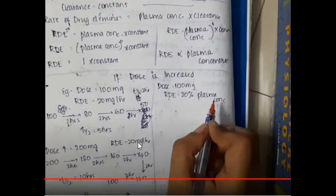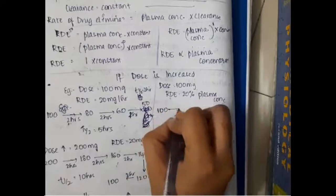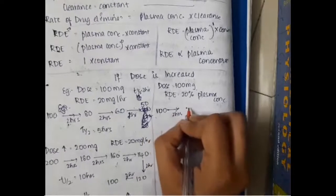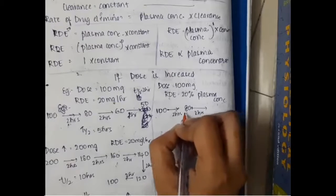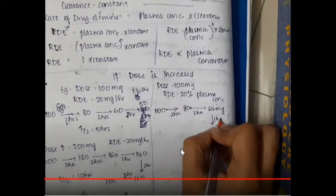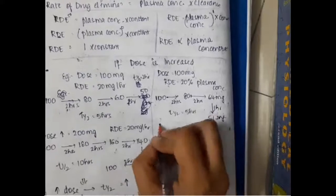In first-order reaction, same dose is 100 mg and rate of drug elimination is 20% of plasma concentration. If you give 100 mg, within 2 hours it becomes 80 mg; then 20% of 80 mg — that is 16 mg is lost — giving 64 mg; then 20% of 64 mg is lost, leaving about 51.2 mg. So the half-life here is 6 hours.